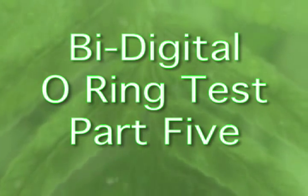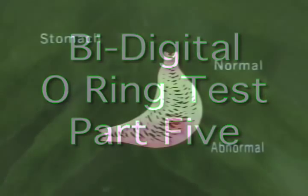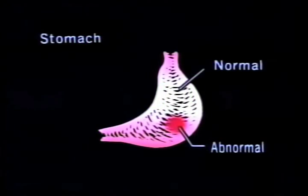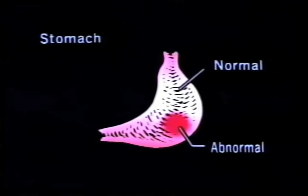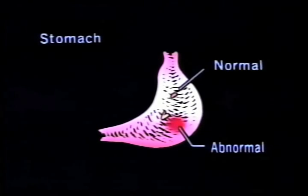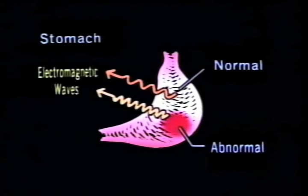Each part of the body has electromagnetic waves. Dr. Omura says that normal tissue and abnormal tissue each have their own electromagnetic waves and emit electromagnetic waves of different frequencies.